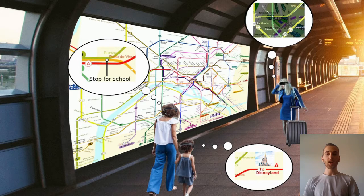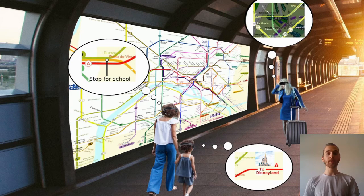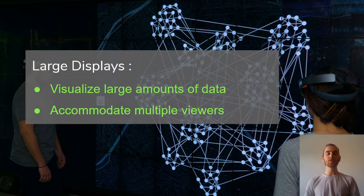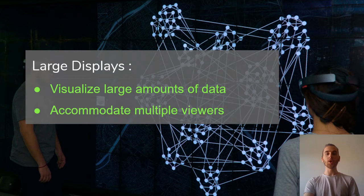Think of a simple scenario: multiple travelers in the metro look at a public display, but they are interested in different kinds of information. They have personal preferences and do not want their information publicly disclosed. Or colleagues working together to analyze a social network, but each has their own personal information about aspects of the data. In these situations, large displays are well suited to displaying large amounts of data due to their high resolution and can accommodate a large number of people in front of it due to their large space.